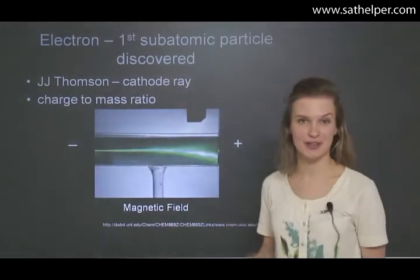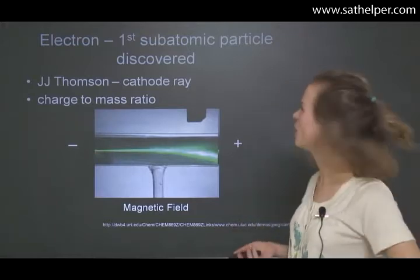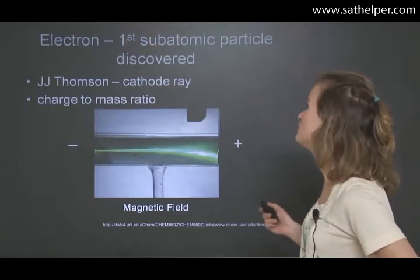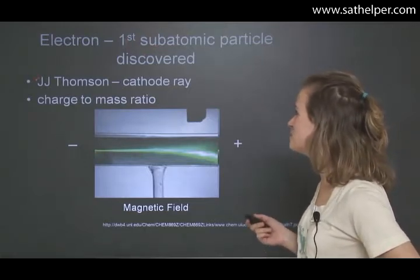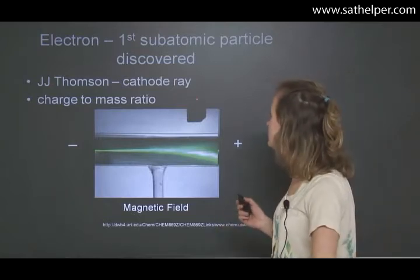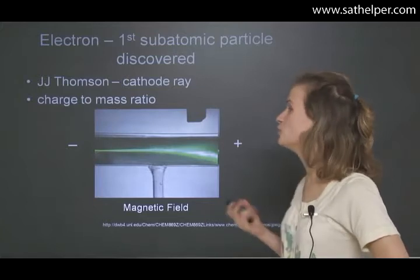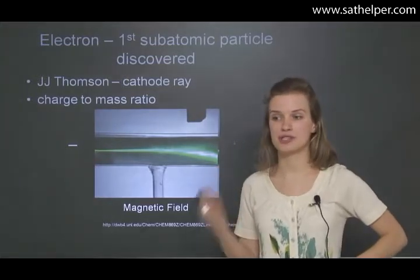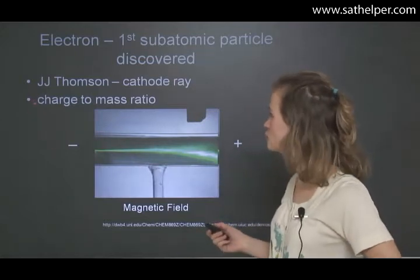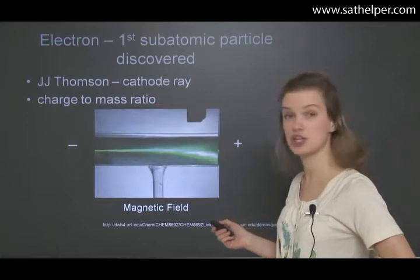The electron is the smallest of the three subatomic particles and was the first subatomic particle to be discovered. Mr. J.J. Thomson, who was an Englishman, had a great experiment with a cathode ray in which he not only discovered the electron, but was also able to pinpoint the electron's charge-to-mass ratio.